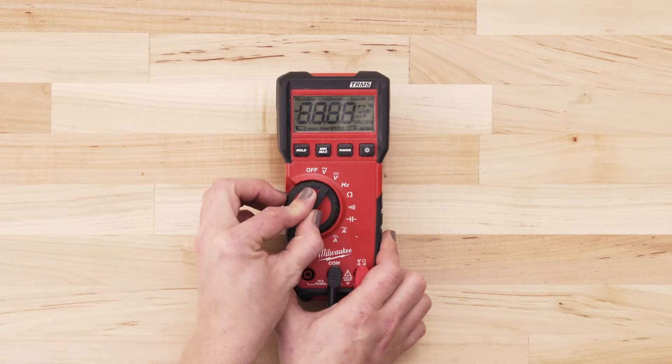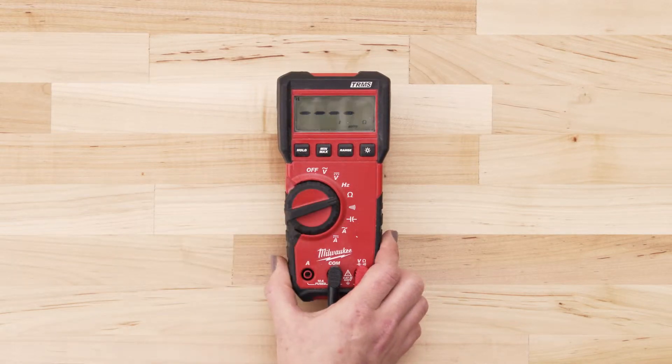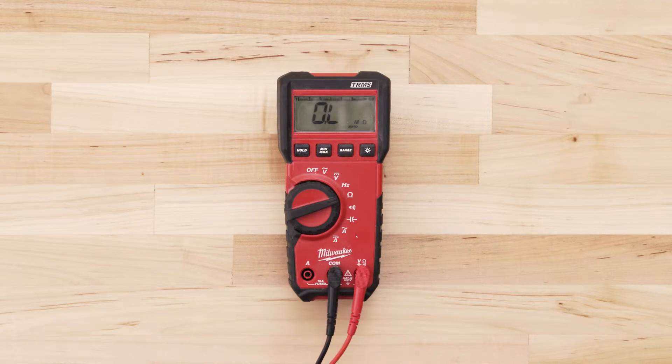If you're using a digital multimeter, also set the dial to the lowest ohms of resistance.